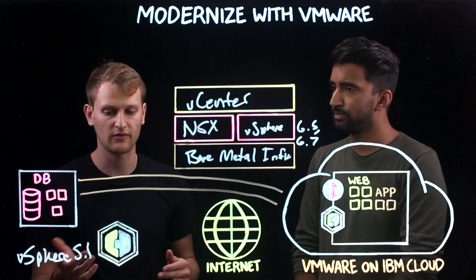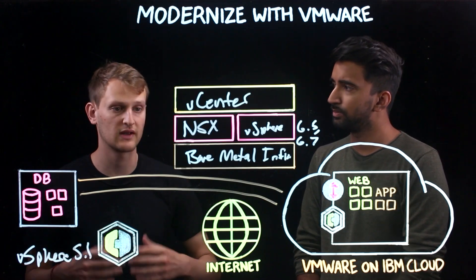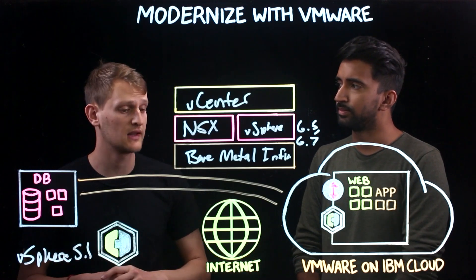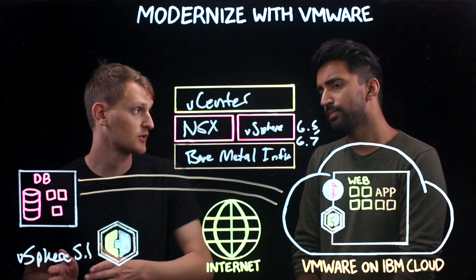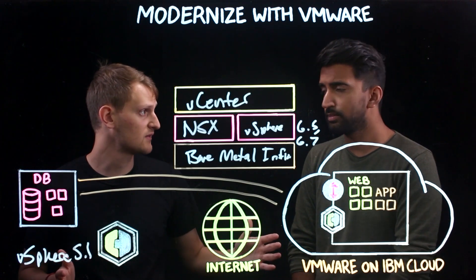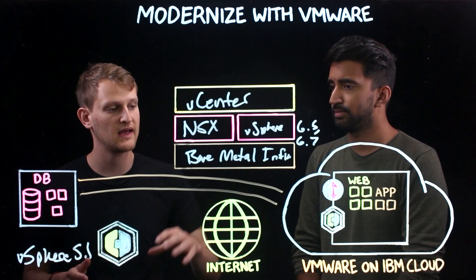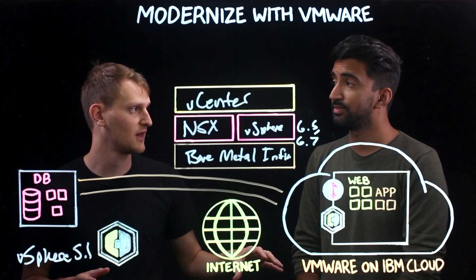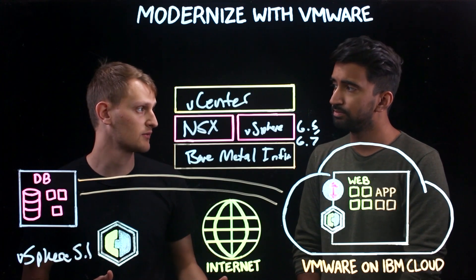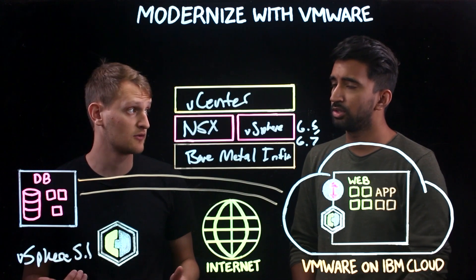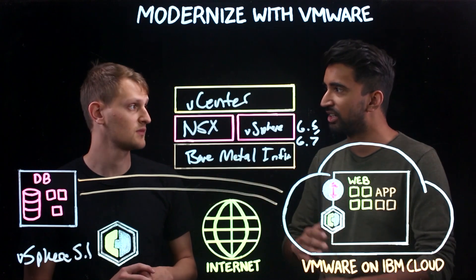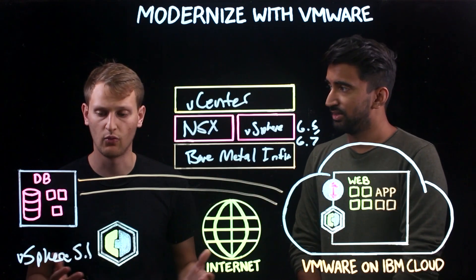One customer story I love to talk about: we had a customer running on vSphere 5.0 on old hardware in a data center in California, and they were looking to try VMware on IBM Cloud. They actually moved that application from California all the way to Washington DC — across the country. Even with the increased latency compared to other VMs in their application, that application actually ran better in IBM Cloud because it was running on the latest software and hardware, so the compute advantages outweighed the disadvantage of cross-country latency.